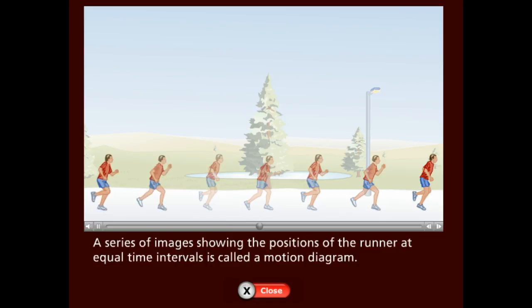A series of images showing the positions of the runner at equal time intervals is called a motion diagram.